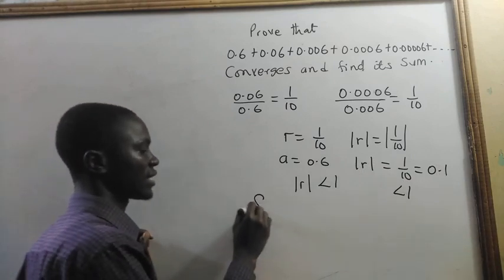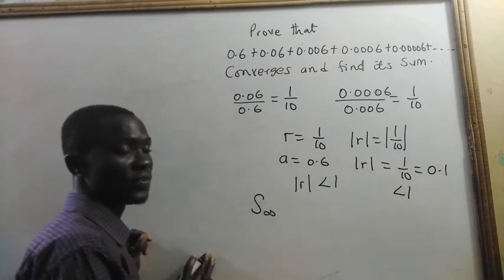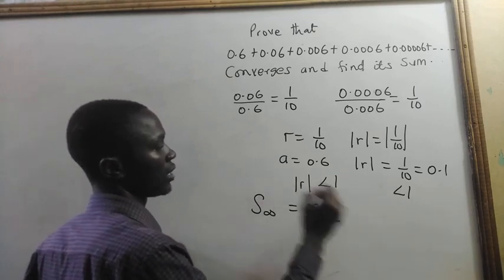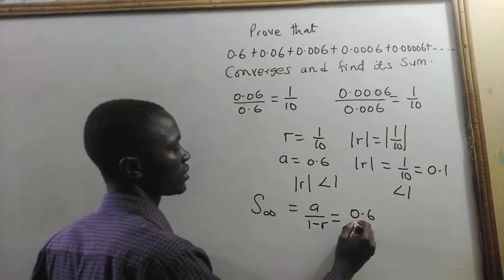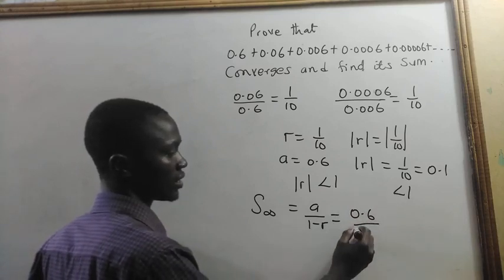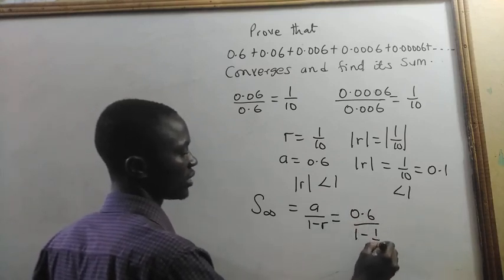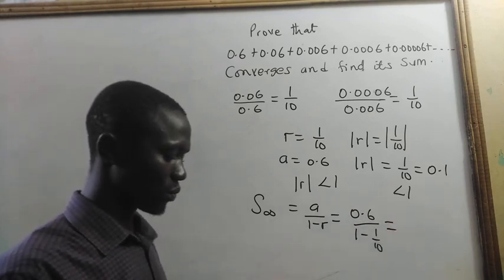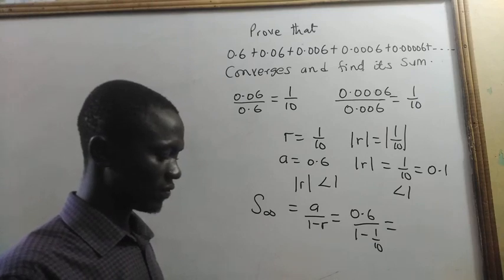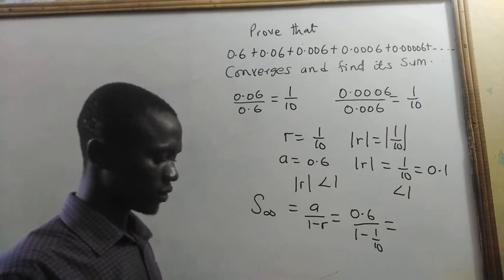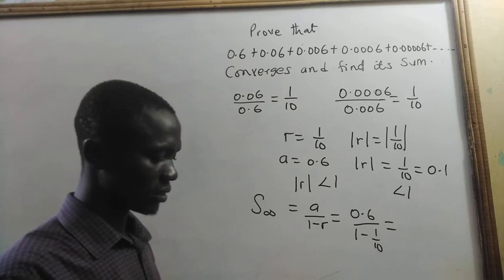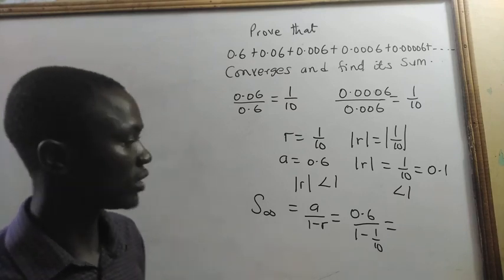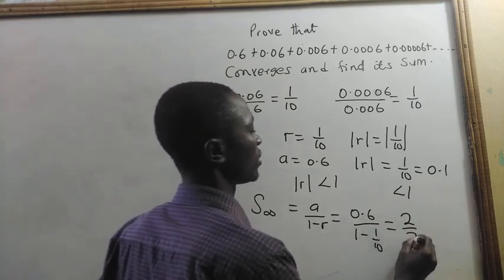Now if this happens, the sum to infinity of the series is given by A divided by 1 minus R. So we have A is 0.6 and R is 1 on 10, giving us 0.6 divided by 1 minus 1 on 10. And we get 2 on 3. We have 2 on 3.